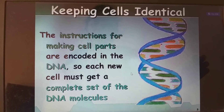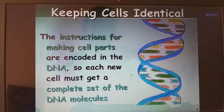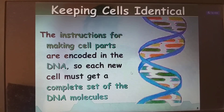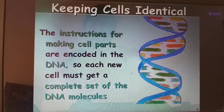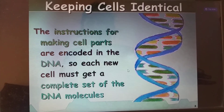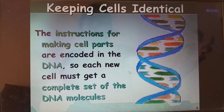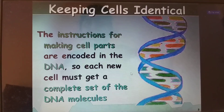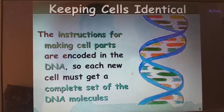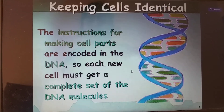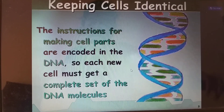Keeping cells identical: the instructions for making cell parts are encoded in DNA, which is why we call DNA the blueprint of our body. What the cell has to be, how it has to be, what materials have to be included — all of this is encoded in DNA.